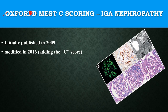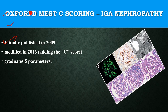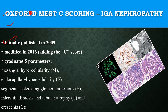Initially, this MEST-C scoring system was introduced in 2009 as a scoring system for histopathological images of IgA nephropathy patients. It was modified in 2016 by adding another important parameter — the presence of crescents — which is also an important prognostic marker.